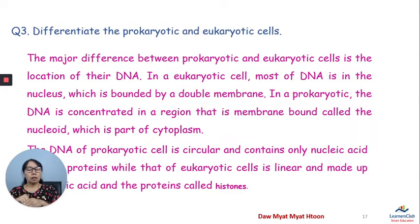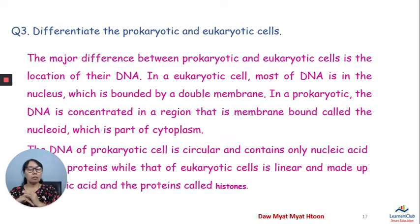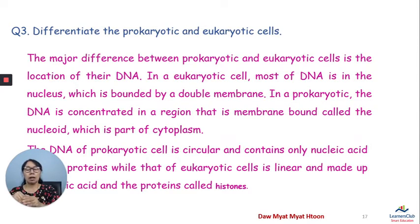In a eukaryotic cell, most of the DNA is in the nucleus, which is bounded by a double membrane. In a prokaryotic cell, the DNA is concentrated in a region called the nucleoid, which is not membrane-bound and is part of the cytoplasm.